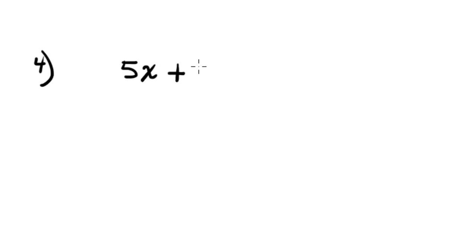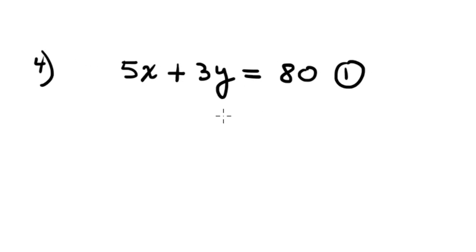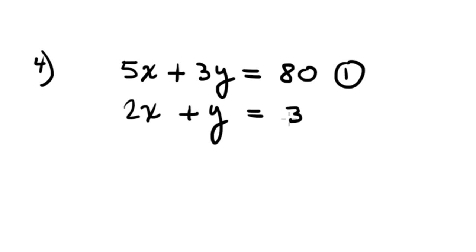Question 4 is about solving the system of equations by elimination. The system is 5x plus 3y equals 80, equation 1, and 2x plus y equals 30, equation 2. Let's solve by elimination.